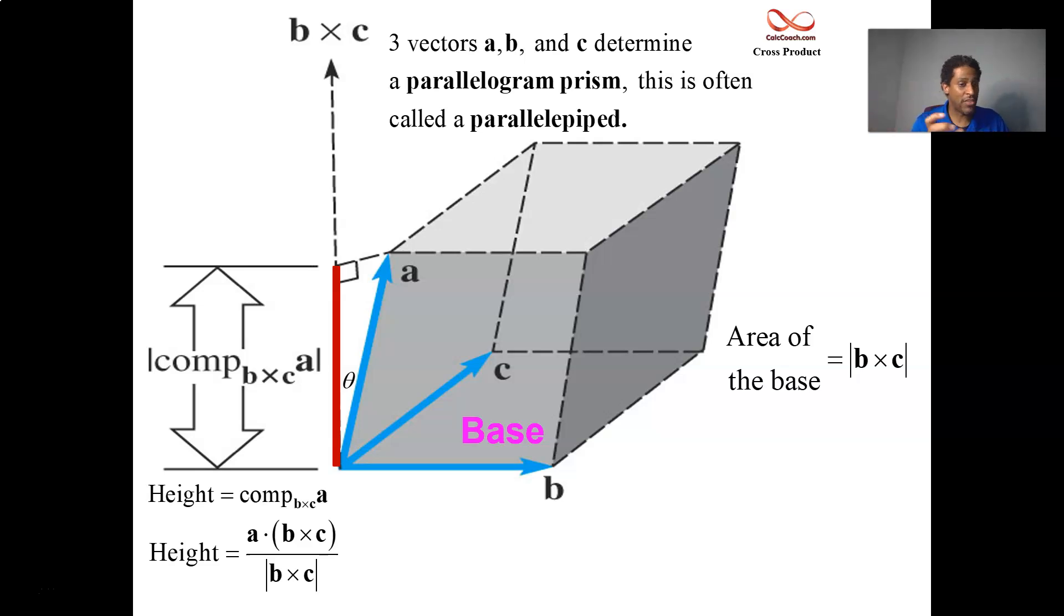So a dot b cross c, b cross c is the vector that you're projecting onto. That gets divided by the magnitude of b cross c. That'll give you the length of the projection vector, which for us is the height of our parallelogram prism.